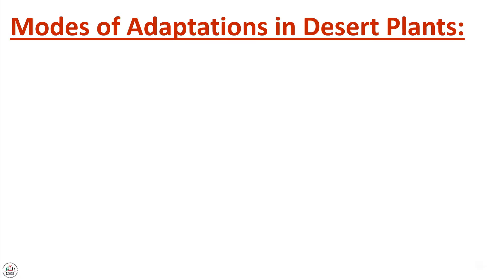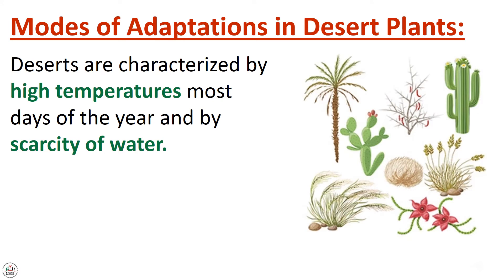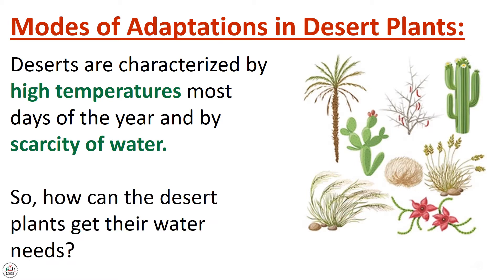Modes of adaptation in desert plants: deserts are characterized by high temperatures most days of the year and by scarcity of water. So how can desert plants get their water needs?